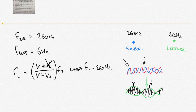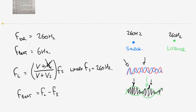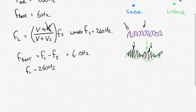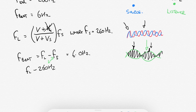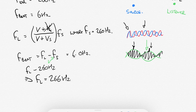The beat frequency is the difference in frequency between the two waves — the frequency the listener observes minus the frequency of the source. We have a beat frequency of 6.0 Hertz, so the observed frequency equals 260 Hertz plus 6 Hertz, giving us 266 Hertz. The frequency heard by the listener is therefore 266 Hertz.